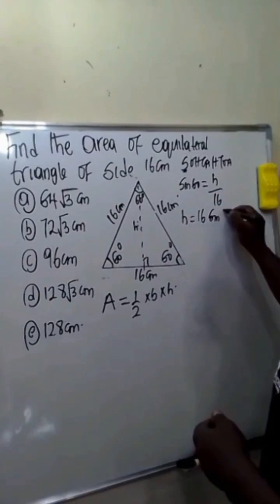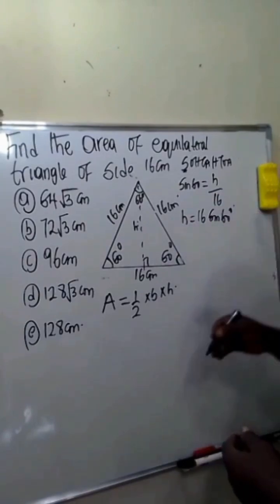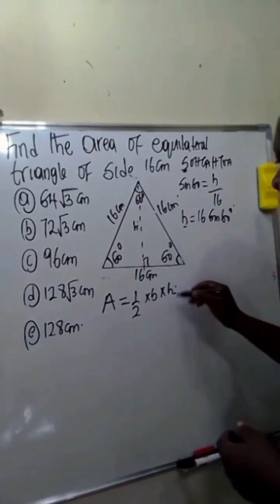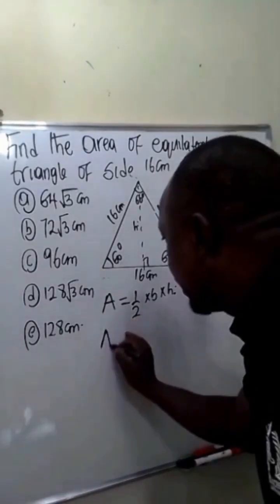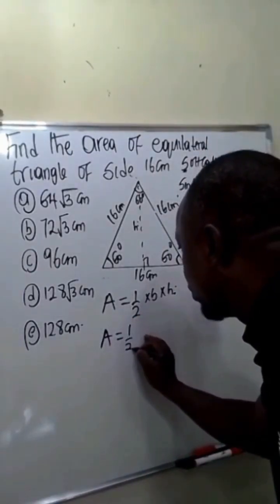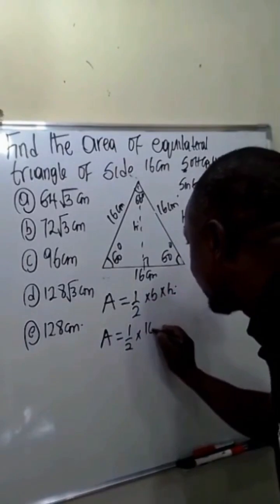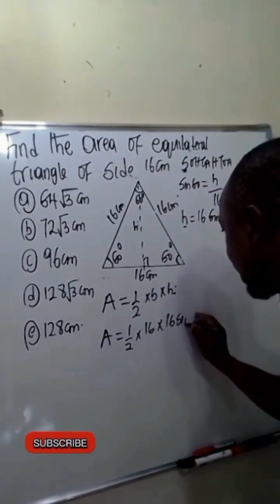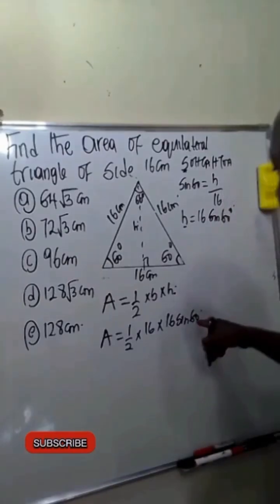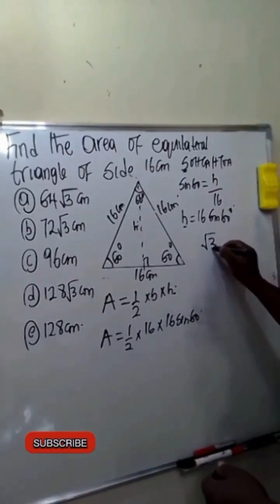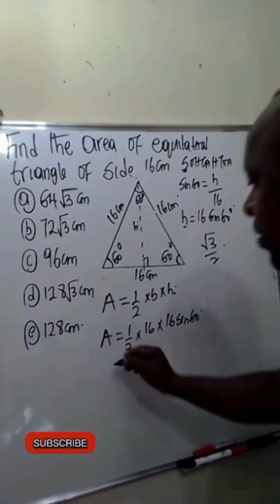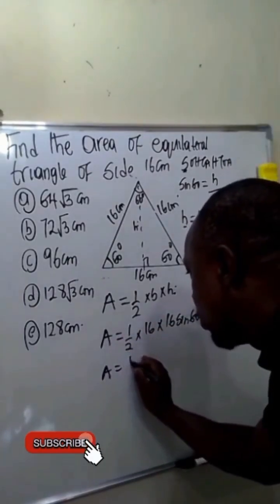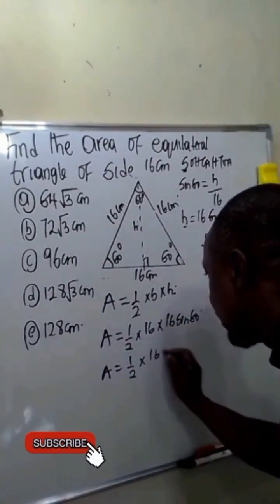We are going to replace this in the formula. Now our area will be equal to 1 over 2 times our base which is 16 times our height which is 16 sin 60. Sin 60 is root 3 over 2, so this will become area equals 1 over 2 times 16 times 16 times root 3 over 2.